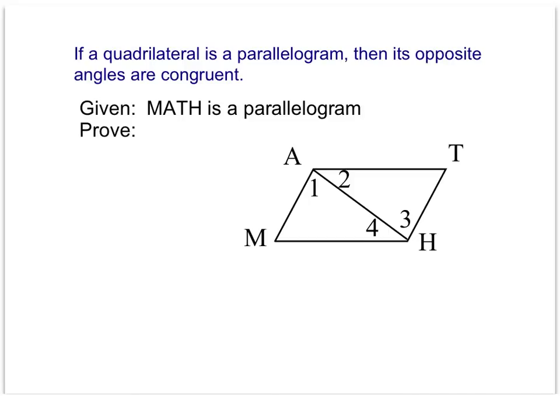We're asked to write a flow proof for the following parallelogram theorem. We have the if statement: if a quadrilateral is a parallelogram, that's always going to be our given. Parallelogram MATH will be our given statement. The then statement — its opposite angles are congruent — is going to be what we try to prove. Our opposite angles, angle M and angle T, are what we're trying to prove.